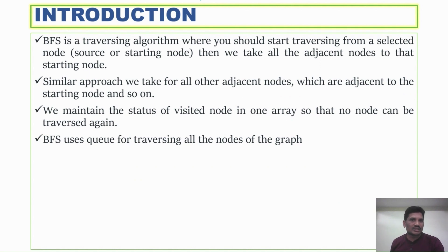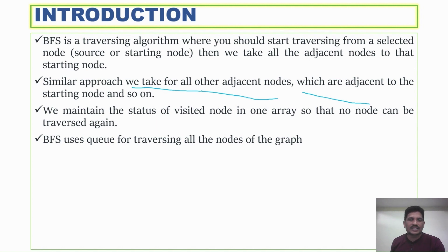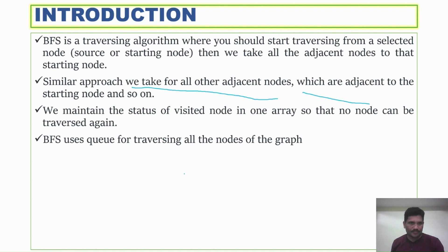BFS is a traversing algorithm where you start traversing from a selected node or selected vertex, which is also called the starting node. Then we take all the adjacent nodes to that starting node, and after that the same approach for other adjacent nodes. You can visit any vertex as a starting vertex, then visit all adjacent vertices of the starting vertex, and the same procedure continues until you visit all vertices in the graph. We need to maintain the status of visited nodes in one array so that no node is traversed again — once you visit any vertex, you store it in the array so each vertex is visited exactly once.